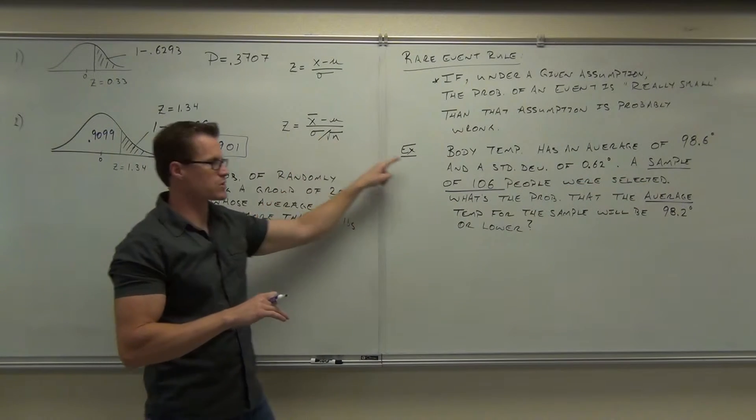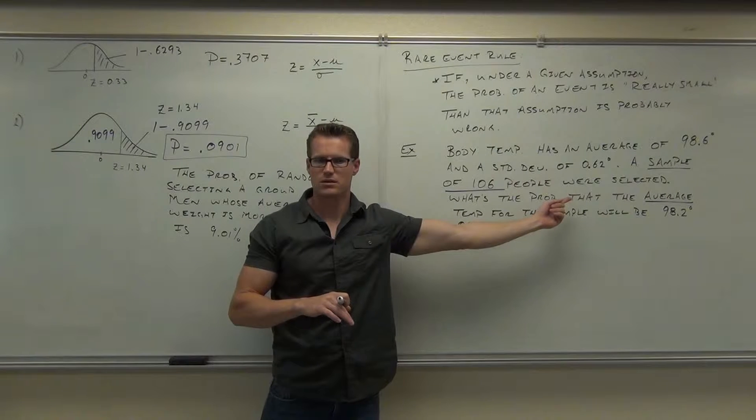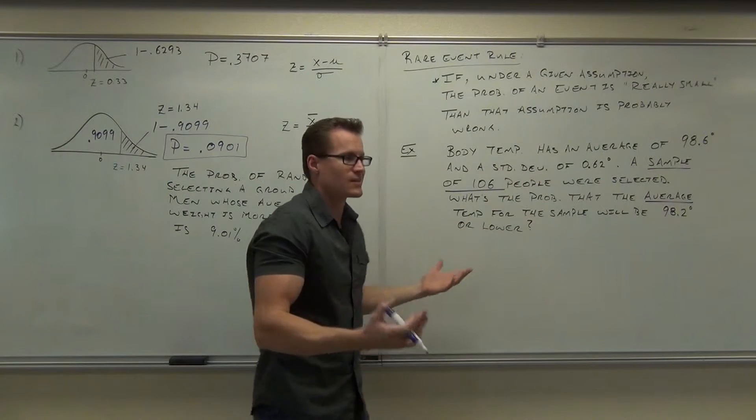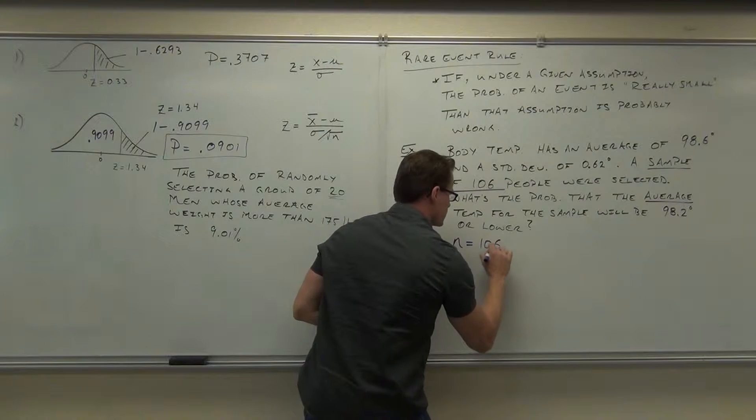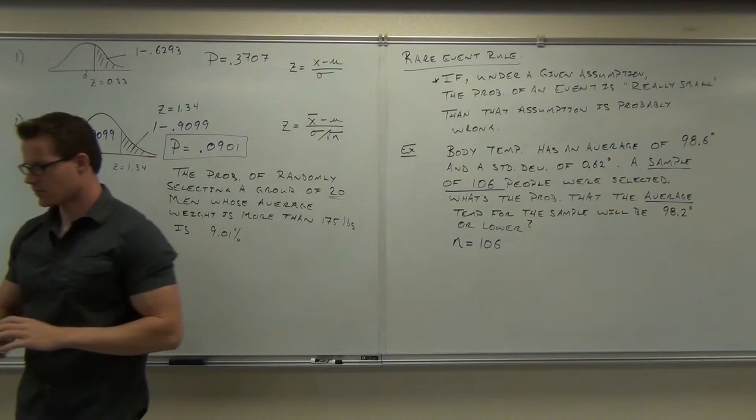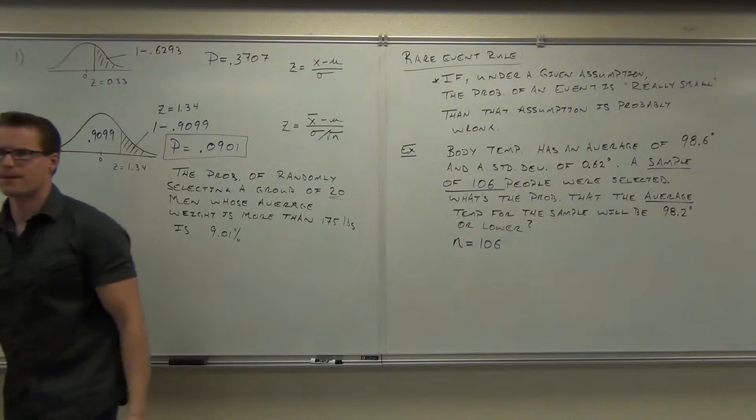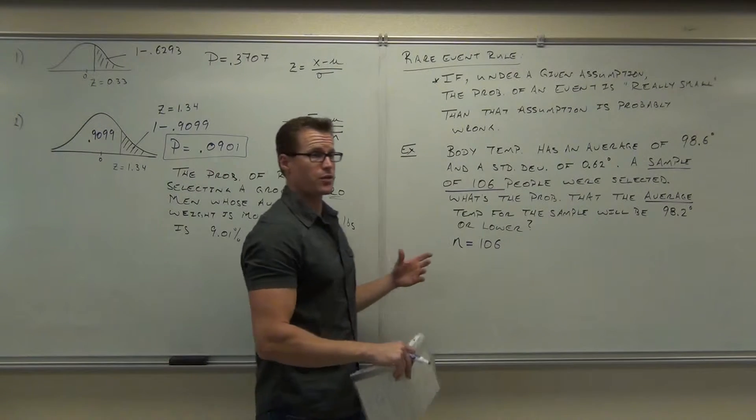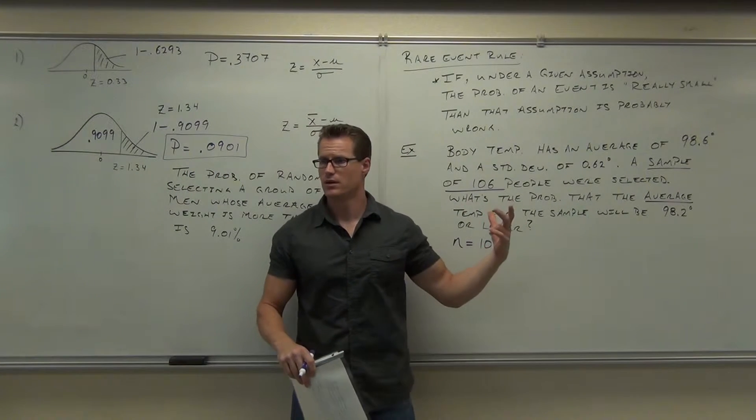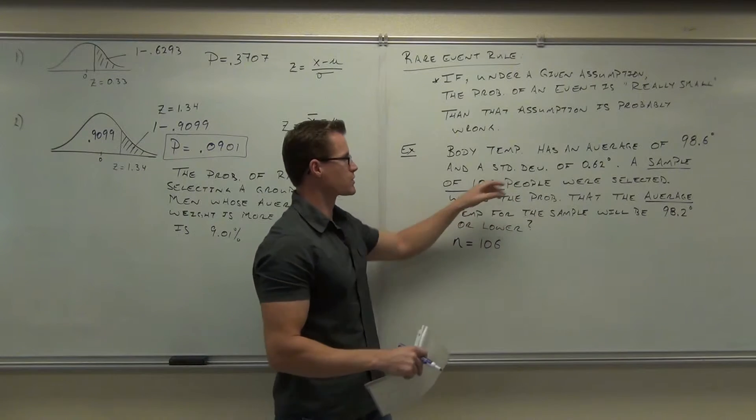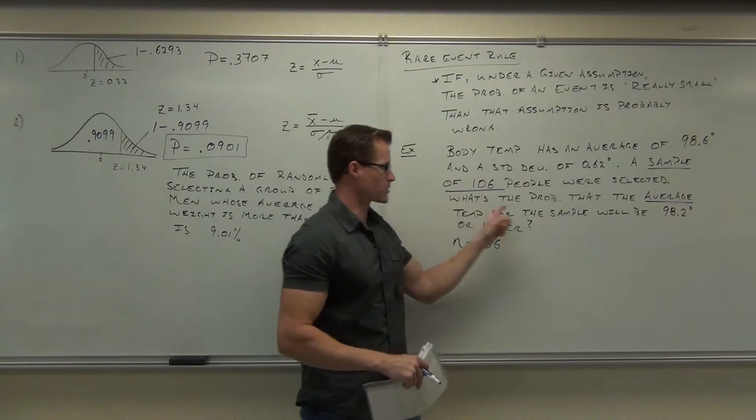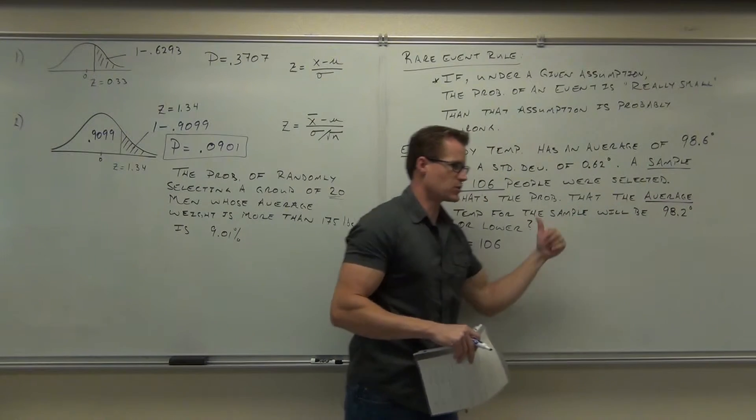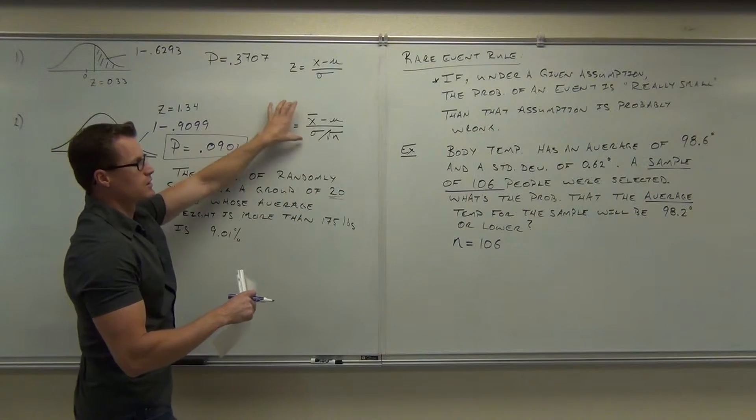That clues you in on which one to use. Over here, this stands for sample size. What's our sample size here? Okay, so that's relevant for our case. So N is 106. So again, are we dealing with an individual value or are we dealing with a group here? Definitely a group. Key words, sample of a certain number of people. That's key. Also, the average thing. The average clues you into we're using this z-score.